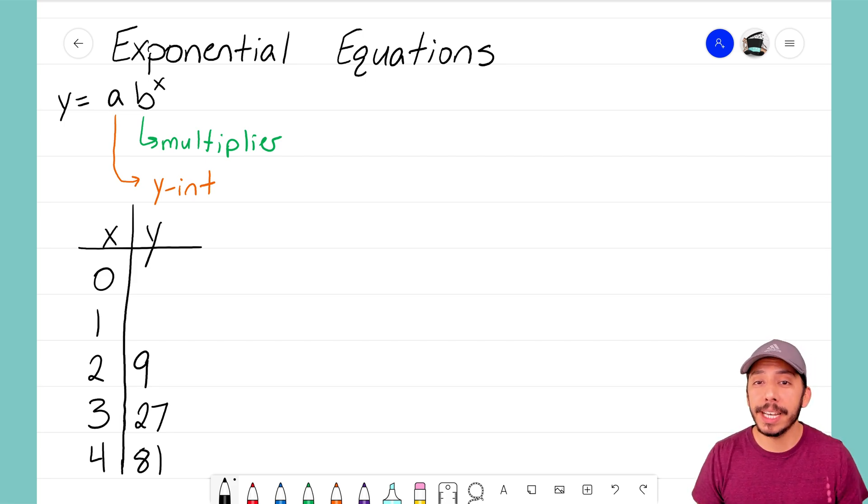Maybe you forgot what an exponential equation looks like, or maybe you didn't watch the introduction video before this one, but I have up here in the top left corner our generic form for an exponential equation. It is y equals a times b to the x power. Remember that a here represents our y-intercept or our starting point, sometimes we call that the zero term, and b represents our multiplier or our growth, our rate of change.